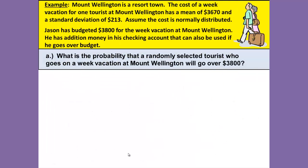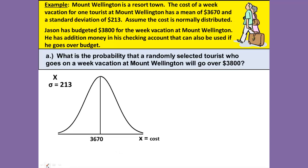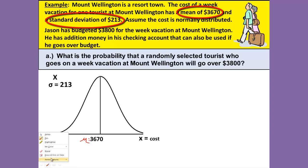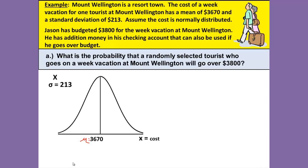Starting with Part A, we want to find the probability that a randomly selected tourist who goes on vacation will go over $3,800. Notice the keyword "normally distributed," which tells us that we need to draw our normal curve with the mean — and yes, I know that's an ugly-looking mu — but a mean of $3,670 and a standard deviation of $213. Our X's are the cost of the vacation.